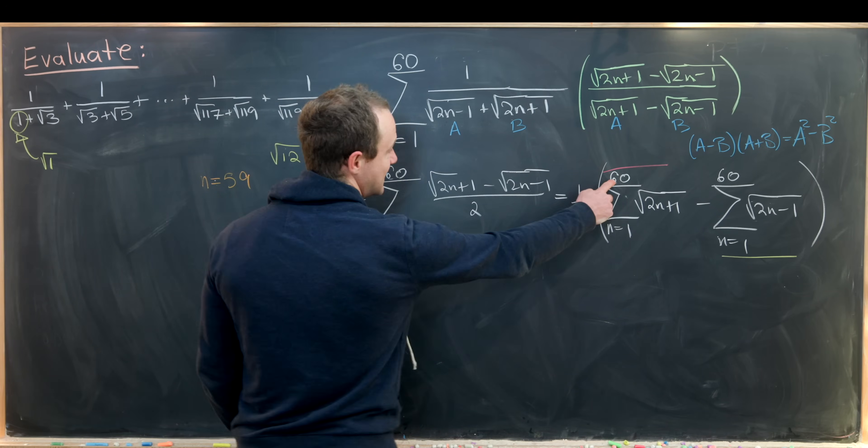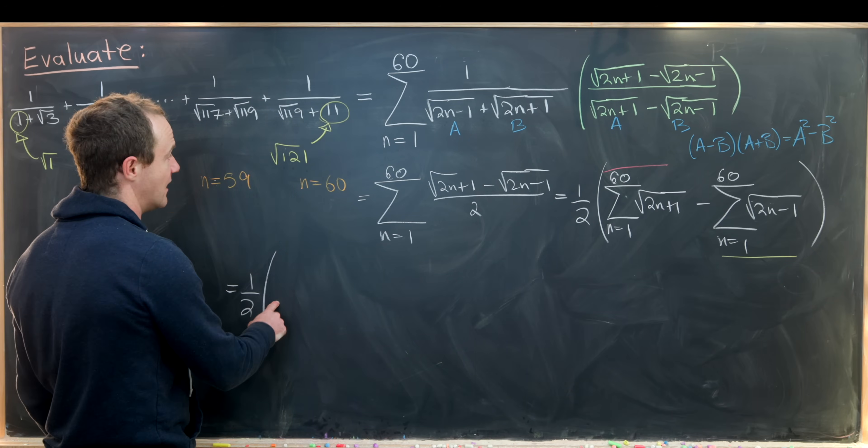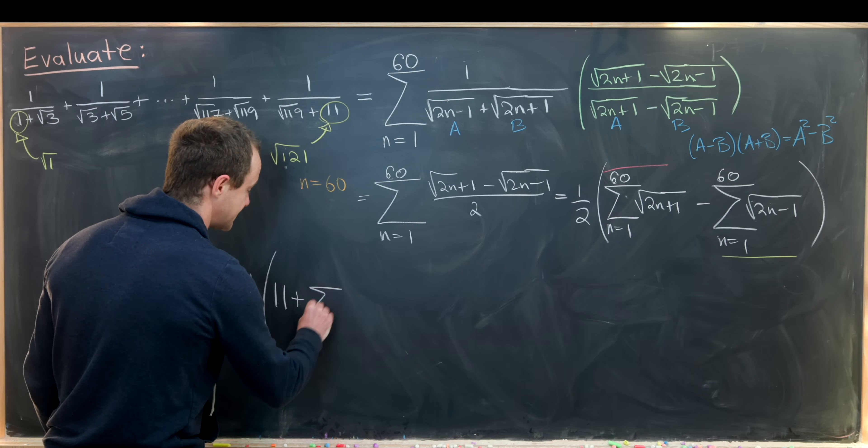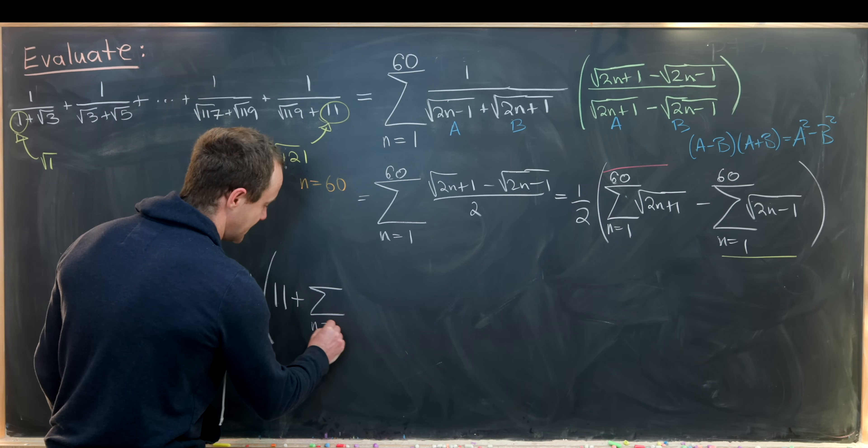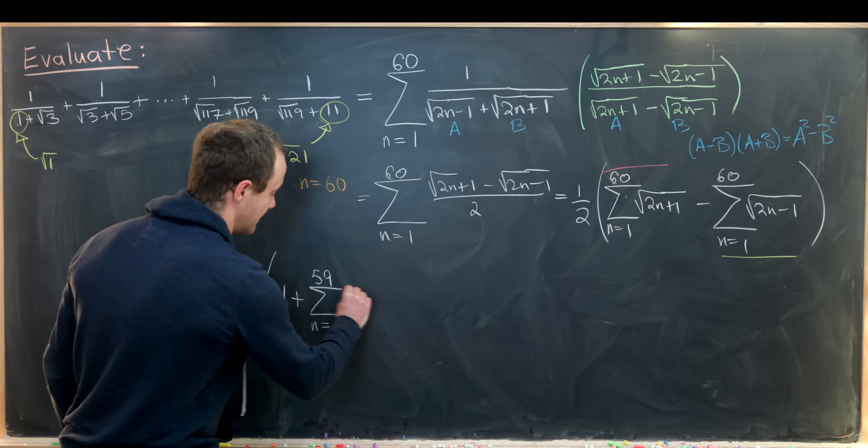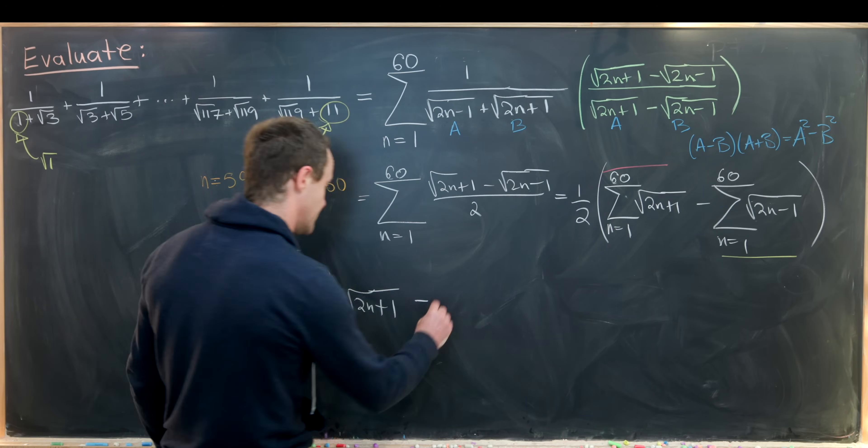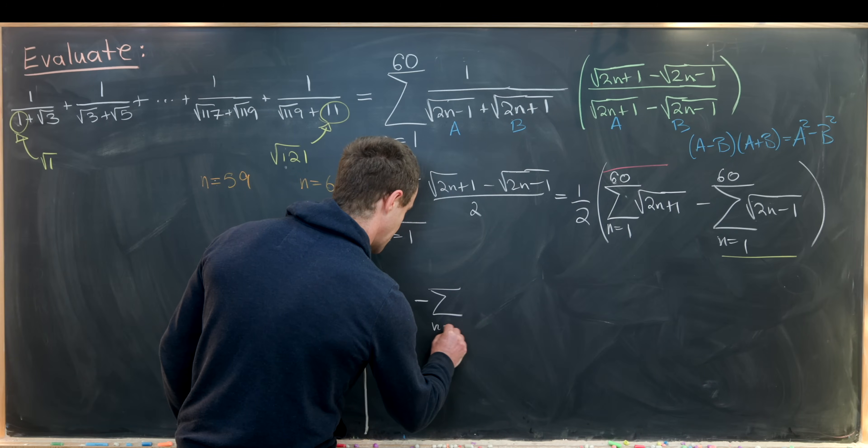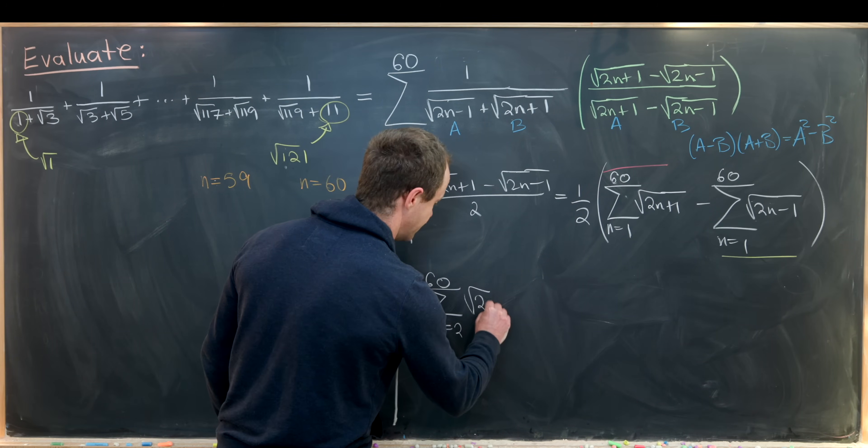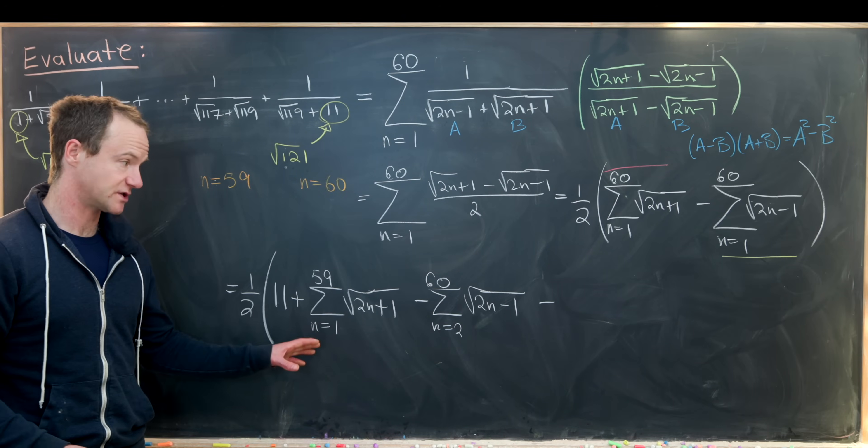We'll have 1/2, and the n = 60 term will be √121 or 11. Then we're left with the sum from n = 1 to 59 of √(2n+1) minus the sum from n = 2 to 60 of √(2n-1), and then minus the n = 1 term.